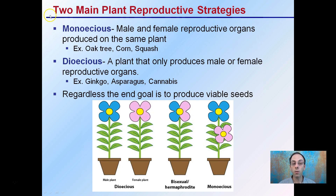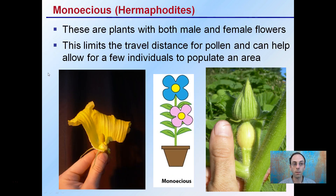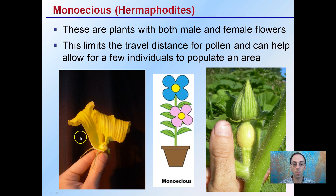Regardless of the reproductive strategy, the end goal is to produce viable seeds. Looking at the monoecious, or hermaphrodites as they're sometimes referred to, these are plants with both male and female flowers. This limits the travel distance for pollen and can help allow a few individuals to populate an area. Here we see a male flower that produces pollen, and a female flower that's producing, in this case, the small pumpkin that will grow, mature, and have the seeds in it.